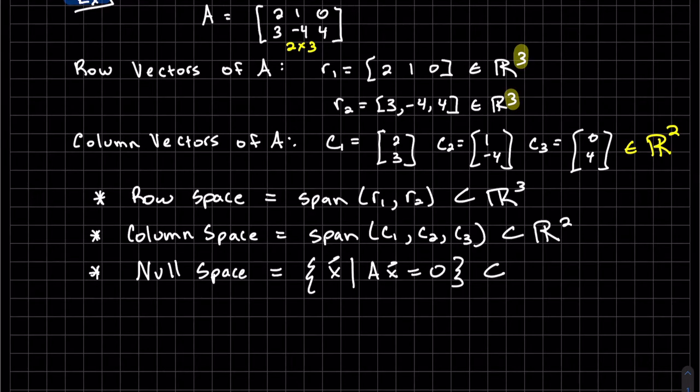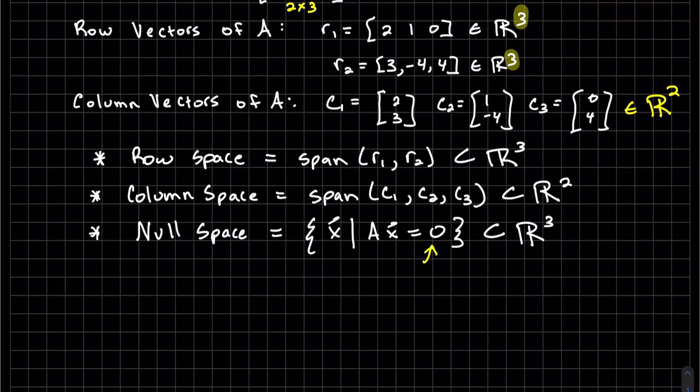Our last space that we're going to look for is the null space. And this is actually a subset of R3. If you remember, this is the homogeneous solution space. It's a homogeneous equation. And just so you can see that it is R3, if we write AX equals 0, A is a 2 by 3, X has to be a 3 by 1, and 0 is a 2 by 1. So you can see here, X is a 3 by 1. It's a subset of R3.